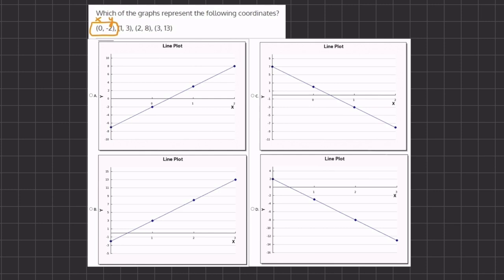If we take a look at a, we go to 0 and we want to find a point over here at negative 2. And because there is no point at this point, then a will not be our answer.